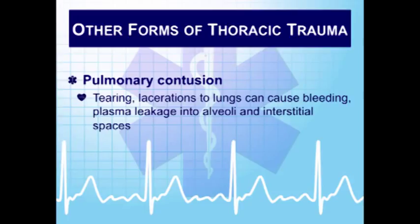Pulmonary contusion occurs when the lung is contused — alveoli and blood vessels can be torn, causing bleeding and fluid leakage into injured tissue and the surrounding spaces. The lung gets impacted against the inside of the chest wall, creating shearing forces that cause the contusion. This is subtle and generally not seen pre-hospital; it is more likely to develop and be recognized in the hospital. If you're transporting a patient between hospitals, you may encounter this. Early on there may be few signs or symptoms, but as the condition progresses the patient becomes increasingly hypoxic, more agitated, and has increasing difficulty breathing.